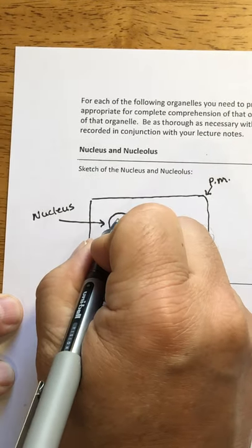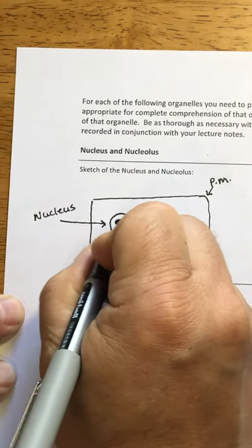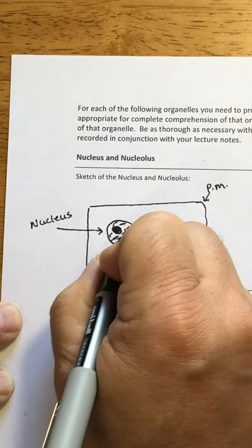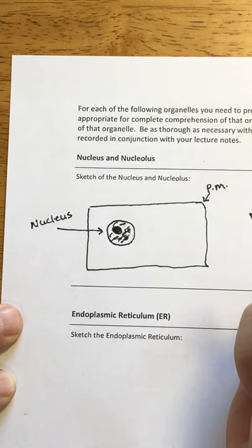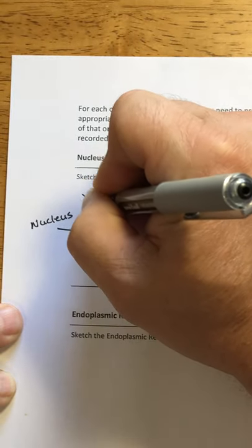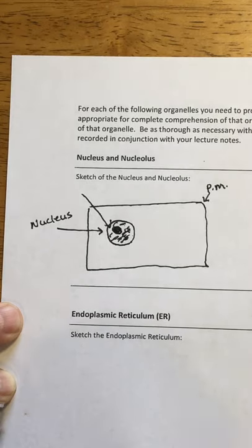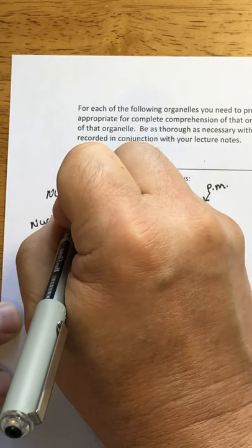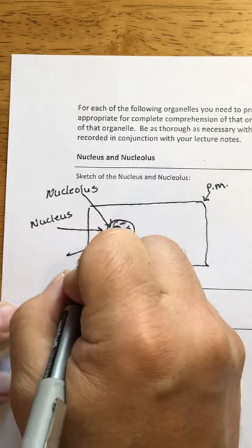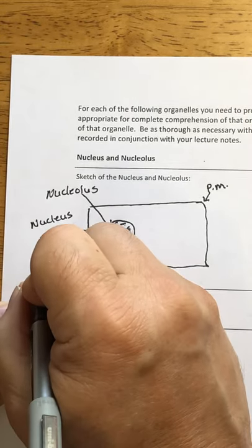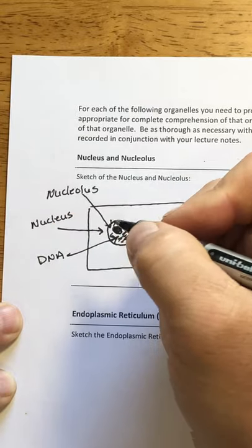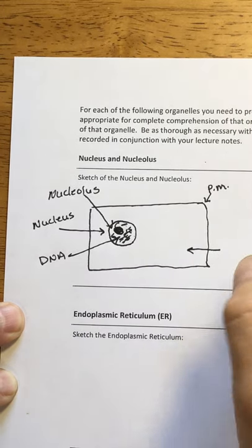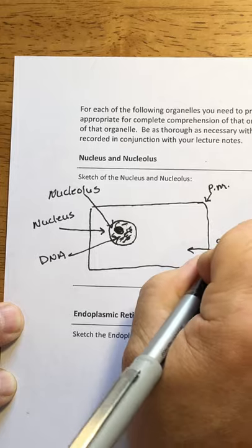Inside of the nucleus, you have that kind of dark conspicuous region — that is the nucleolus. Then you have the genetic material kind of loosely scattered throughout the interior of the nucleus, which represents the DNA in the chromatin form. And then on the interior of the cell, that water-based solution is the cytoplasm.